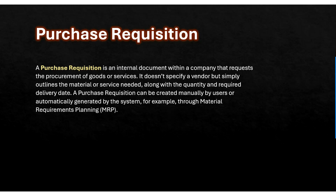Let us take one example. Let us say you work for a company that manufactures laptops. Your department needs 50 new laptops for a new project. You create a purchase requisition in SAP to request these laptops. This document will be used internally and won't be sent to any vendors. The procurement team will later convert this requisition into a purchase order, where they will decide which supplier to purchase these laptops from. A purchase requisition can be created manually or automatically.